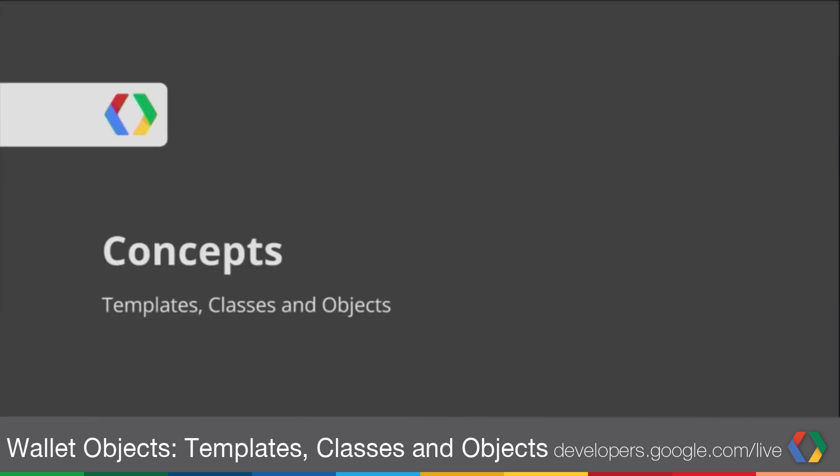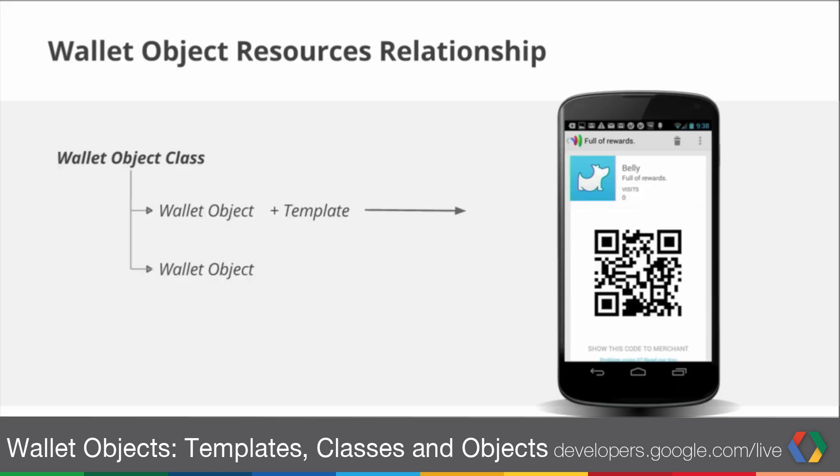Here, what you see is an overview of the relationship between templates, classes, and objects. Basically, classes and objects define the data for a user. Objects inherit and extend the data that's provided within the class. And then templates define how to take this data that's been populated with a class and object and then render it in the UI.